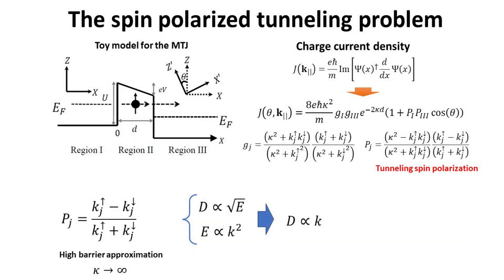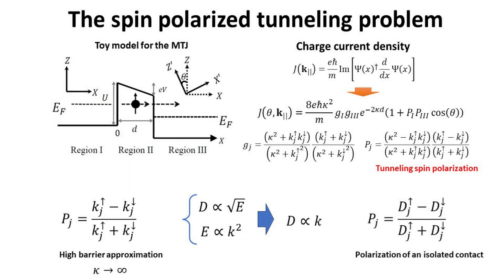Note that for a three-dimensional free electron model, the density of states is proportional to the wave vector, since the density of states is related to the square root of the energy while energy has a quadratic relation with wave vector. Hence, the tunneling spin polarization in the high barrier approximation can be expressed solely in terms of the density of states of spin-up and spin-down channels — precisely the polarization of an isolated contact. Thus calling P1 and P3 polarizations is justified here. More generally, the tunneling spin polarization accounts for coupling between electron wave functions of both contacts, making it a property of the junction rather than of isolated contacts, which is why the term tunneling spin polarization is more appropriate.